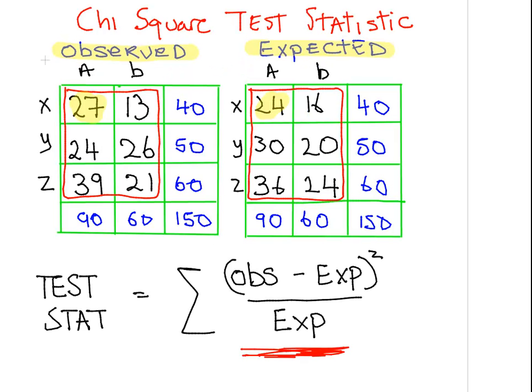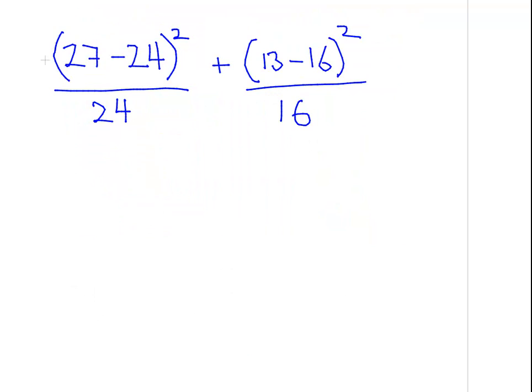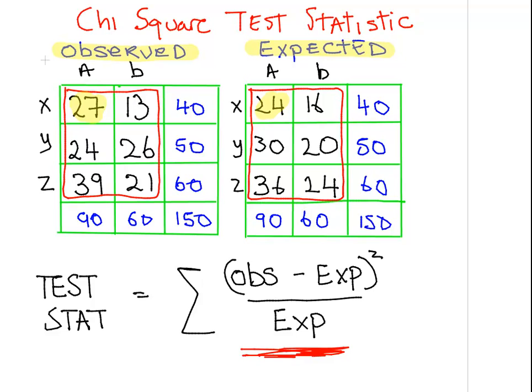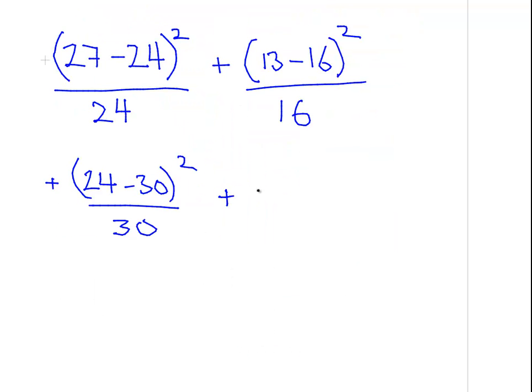And the next one is 24 is the observed, 30 is the expected. So I'm matching the cell structure - it's 24 minus 30 over 30. The expected value there is 30. The next one is 26 and 20. So the observed is 26 minus 20, square that, and that's over 20.